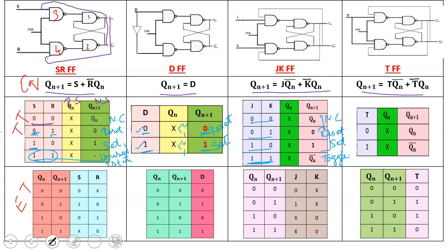Next is T flip-flop. T stands for toggle. If T=0, the output is maintained — the present state is unchanged. If T=1, the output toggles, which is the complement. So 0 becomes 1 and 1 becomes 0. This is the truth table of all the flip-flops.